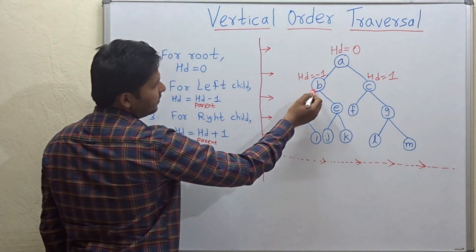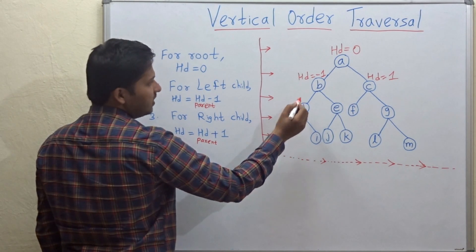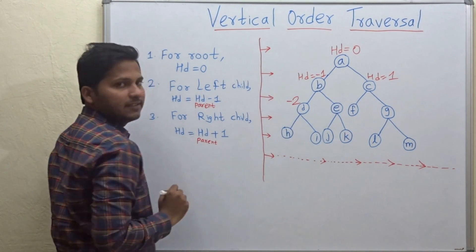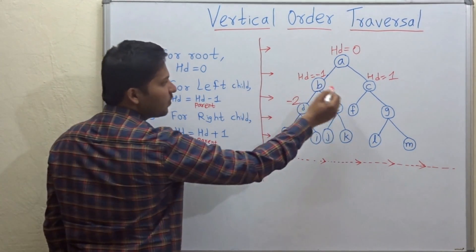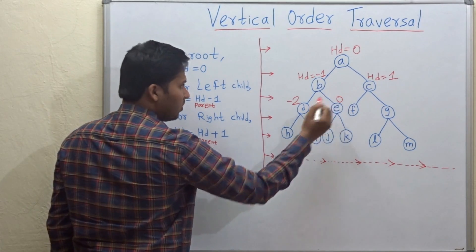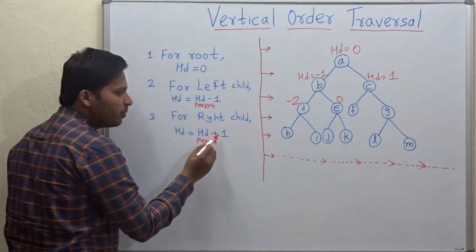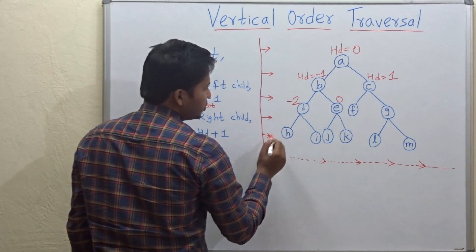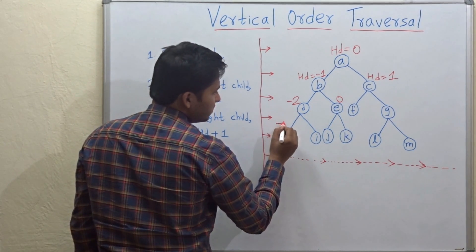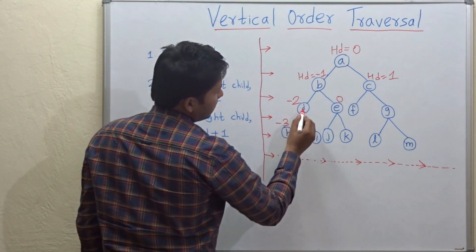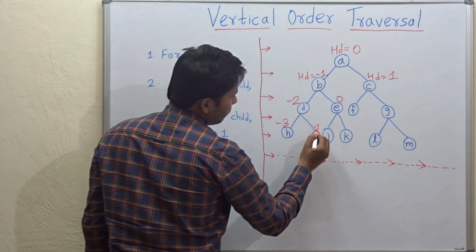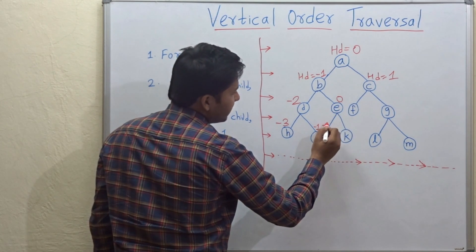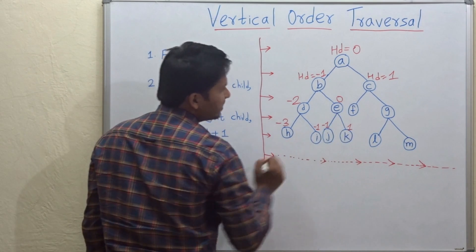For the left child of b, which is d, hd is minus 1 minus 1, which is minus 2. And for the right child, minus 1 plus 1 is 0. Now for the left child of d, which is h, hd is minus 2 minus 1, which is minus 3. And minus 2 plus 1 is minus 1 for the right child. For node e's children, 0 minus 1 is minus 1 and 0 plus 1 is plus 1.